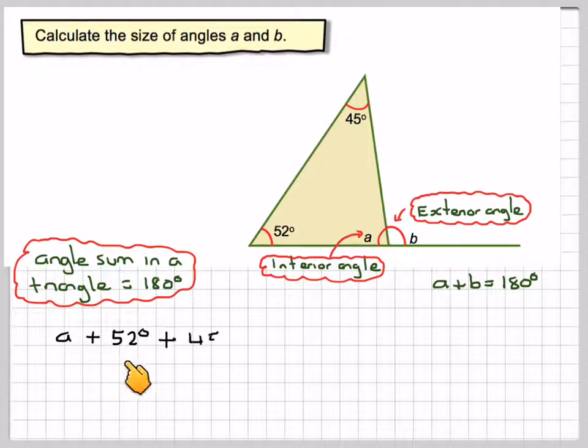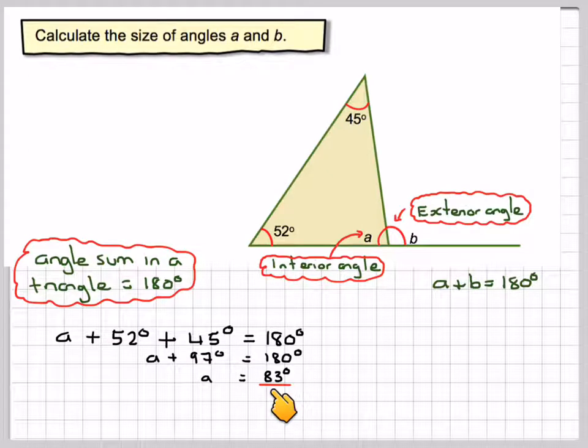So, I can say that A plus 52 plus 45 is equal to 180. A plus 97 is equal to 180 degrees. And then taking 97, I can say that A is equal to 83.